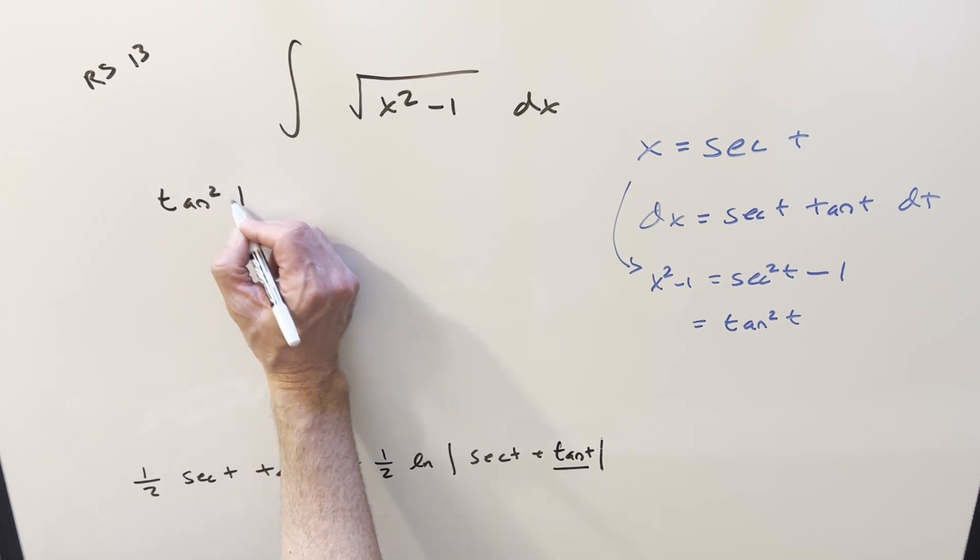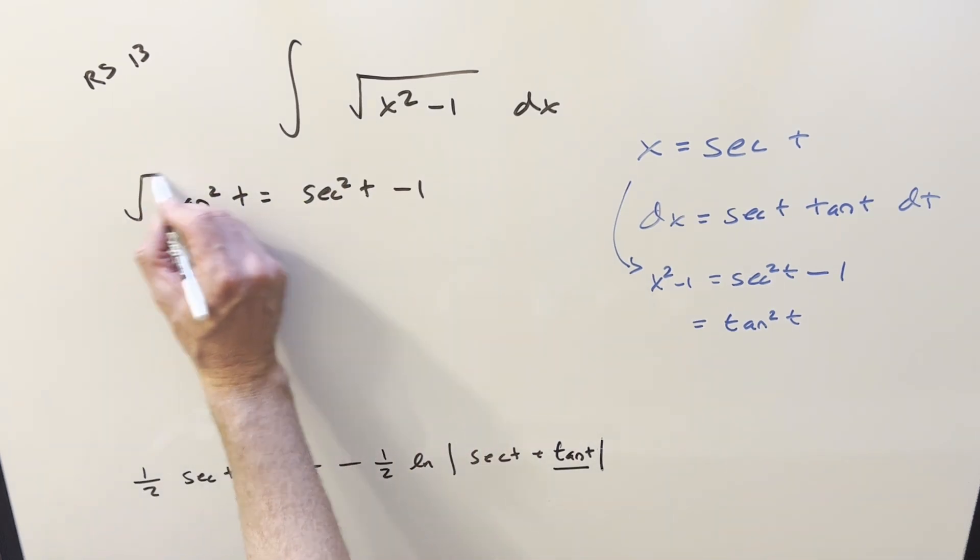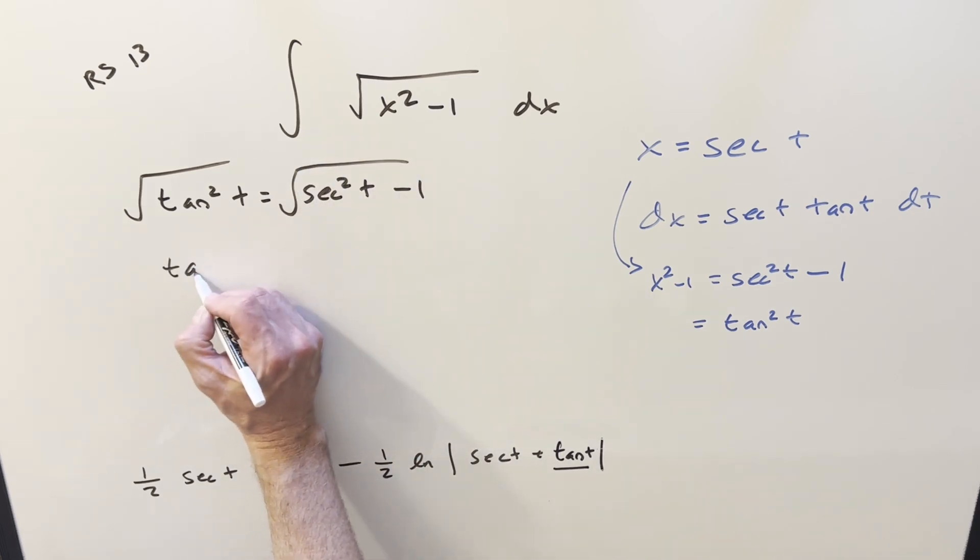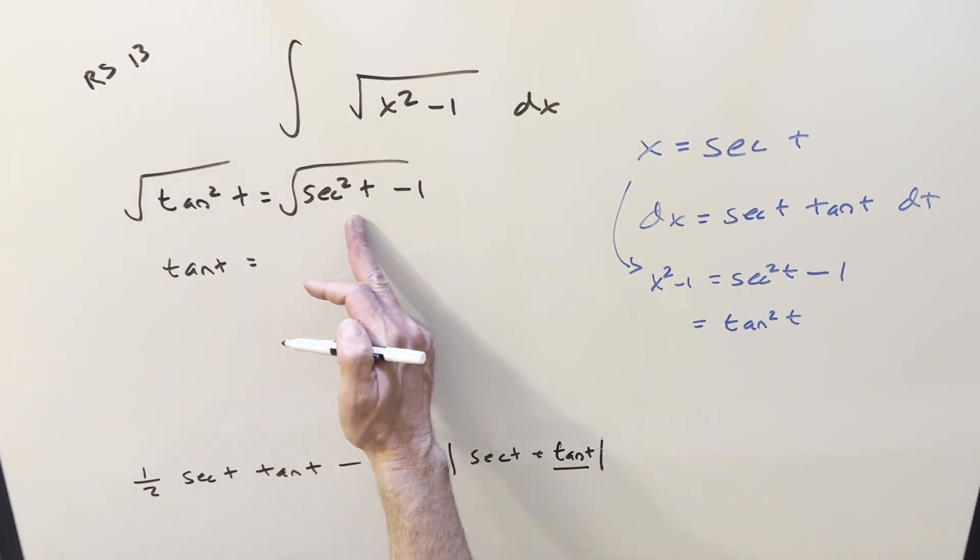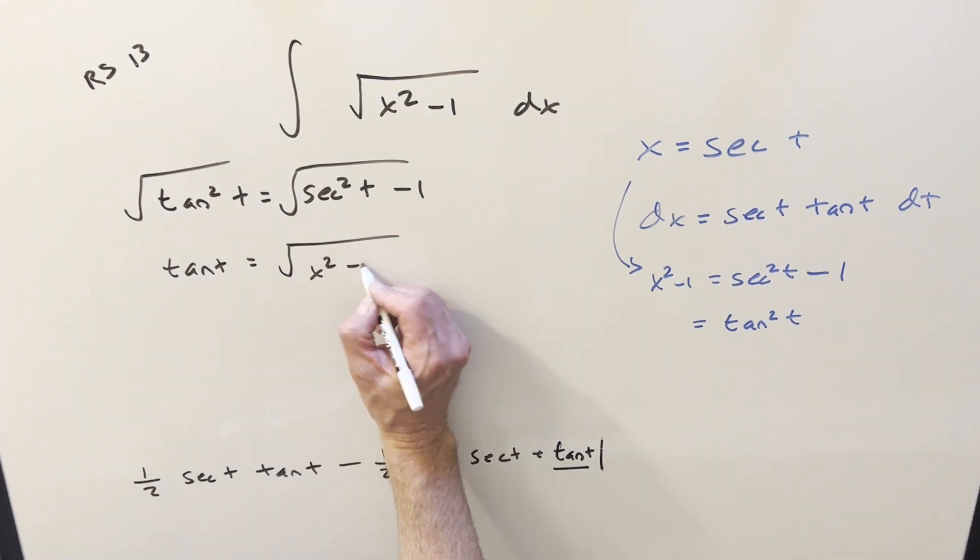We've got this formula, tan squared t equals secant squared minus 1. If I take a square root on both sides, I have isolated tan t, but then secant is going to be x. So I can write this as x squared minus 1. So with this, now we've got everything we need to back substitute.